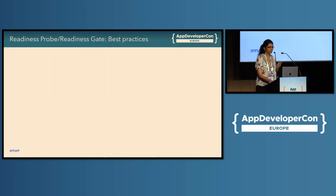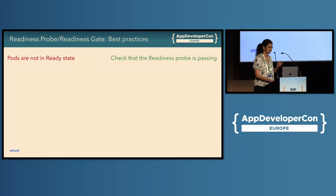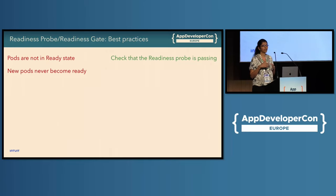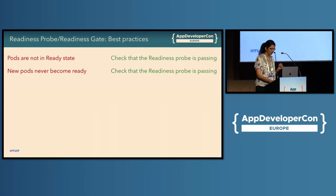Here are some common problems and solutions with readiness probes and readiness gates. If your pods are not in a ready state, check your readiness probes — it's a straightforward check to make sure they are passing. If new pods never become ready while old pods are fine, the readiness probe for the new pods may have changed. Check the new pods' readiness probes to make sure they are passing.